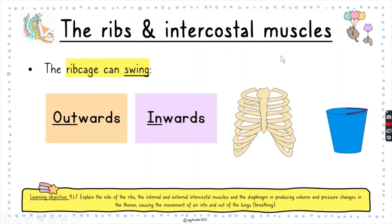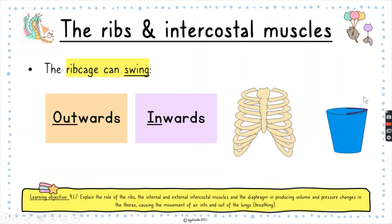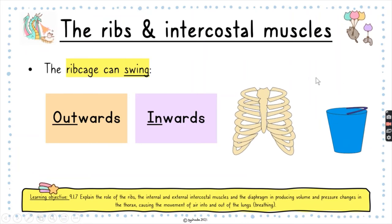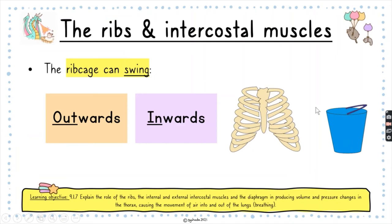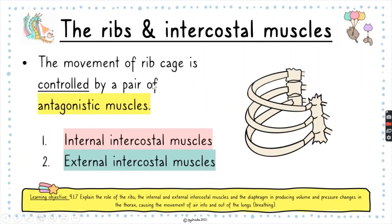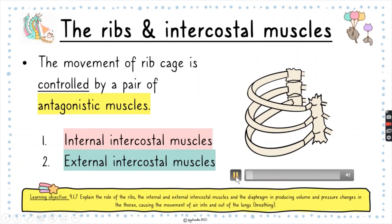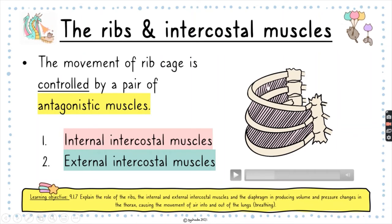The rib cage has the ability to swing outwards and inwards, controlled by the intercostal muscles. Think of the bucket-handle analogy: when the bucket handle moves up, that is equivalent to our ribs moving up, and it can also move down — inwards. The ribs moving upwards and inwards is controlled by a pair of antagonistic muscles, which work opposite to each other but in pairs — the internal and external intercostal muscles.